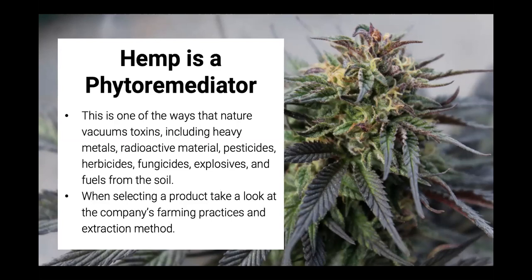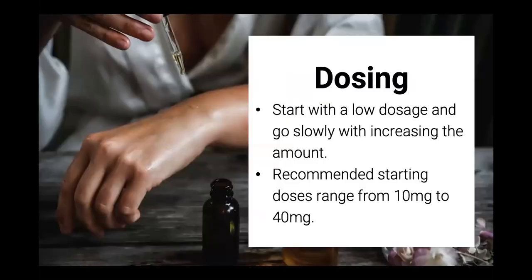Adding essential oils creates a chemical profile similar to broad spectrum without the risk of THC contamination. The hemp plant is known as a phytoremediator, meaning it vacuums toxins including heavy metals, radioactive materials, pesticides, herbicides, fungicides, explosives, and fuels from the soil. This is why you should be looking at the farming practices of any company you choose a product from — you do not want those materials in anything you put in your body.